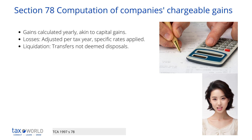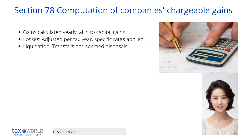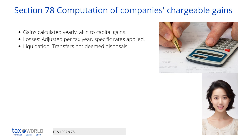When a company's assets are transferred to a liquidator, it's not considered a disposal. The actions of the liquidator are seen as those of the company, and transactions between the liquidator and the company involving the company's assets are disregarded.